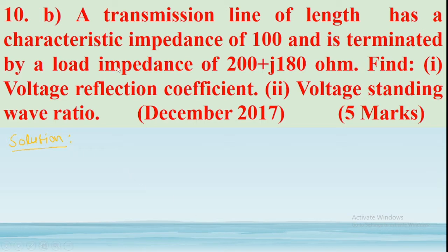The question is: a transmission line has a characteristic impedance of 100 ohms and is terminated by a load impedance of 200 plus j180 ohms. Find the voltage reflection coefficient and voltage standing wave ratio.